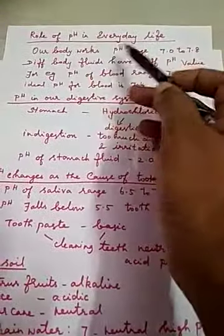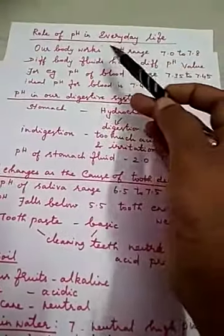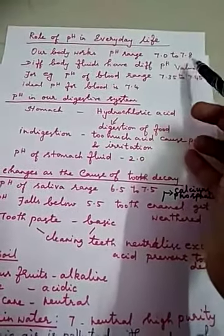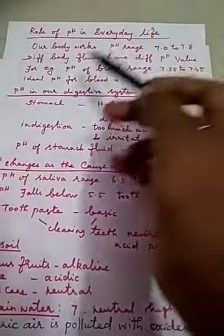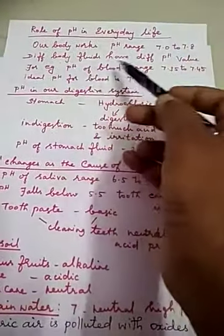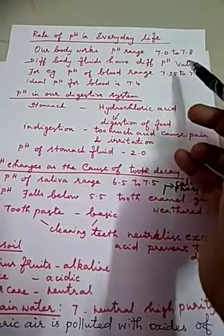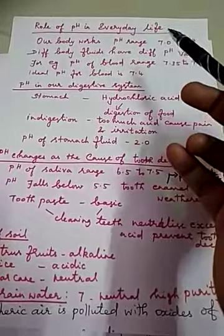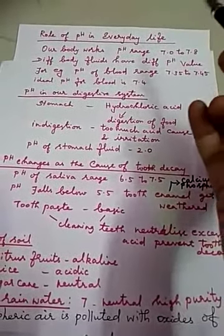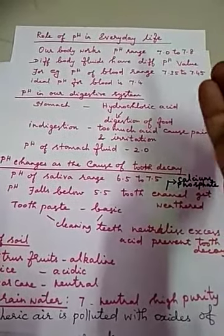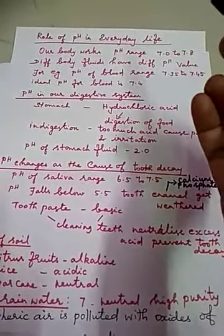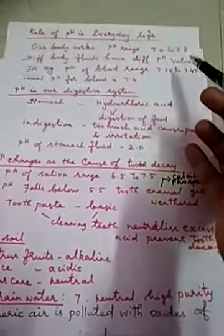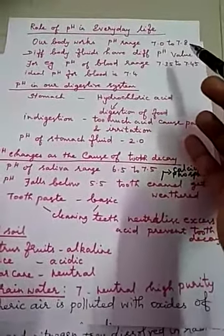The role of pH in everyday life. Our body works in the pH range 7.0 to 7.8. Different body fluids present in our body cover different pH values. For example, blood, lymph, and urine are the fluids present in our body.